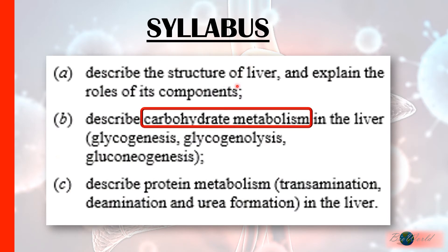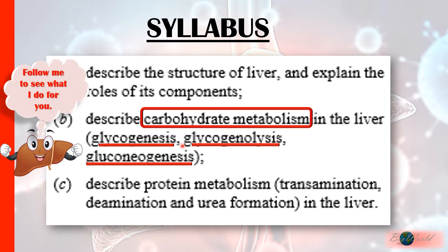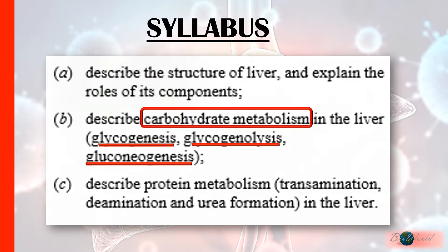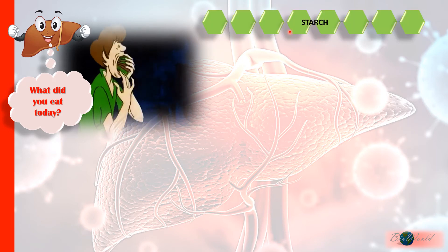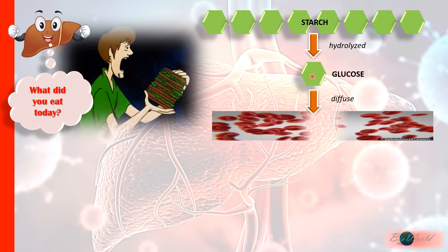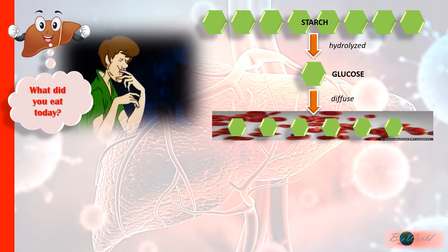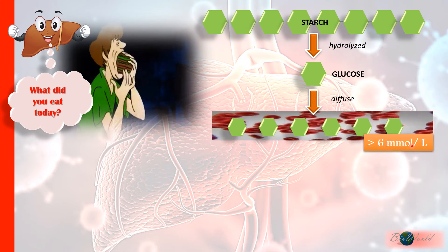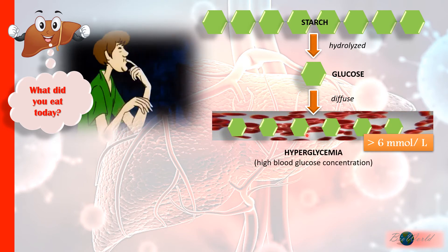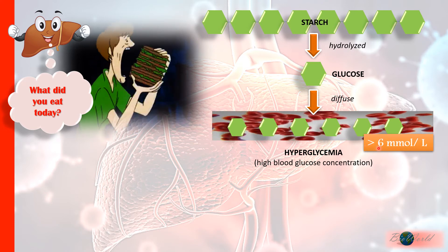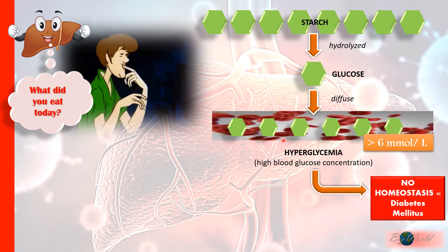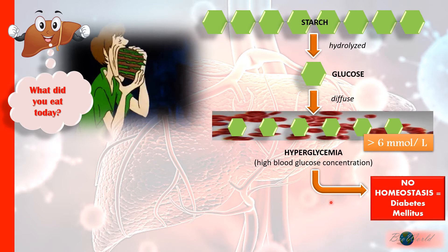Now that we are familiar with the structure of the liver, let's move on to its functions. The first function is carbohydrate metabolism, which includes glycogenesis, glycogenolysis, and gluconeogenesis. Carbohydrate metabolism is related to our diet. When we eat carbohydrate-rich food, the starch is hydrolyzed into glucose and diffuses into our blood. Normal blood glucose levels are around 6 millimoles per liter. Eating excessively will cause hyperglycemia — when blood glucose concentrations are much higher than 6 millimoles per liter — and without efficient homeostasis, this leads to diabetes mellitus.